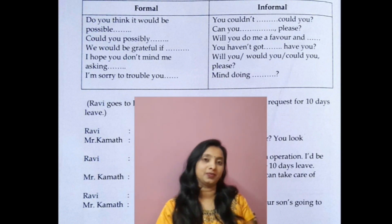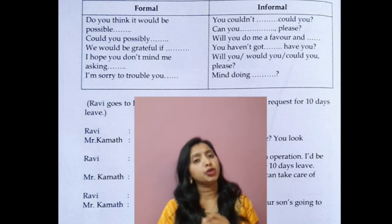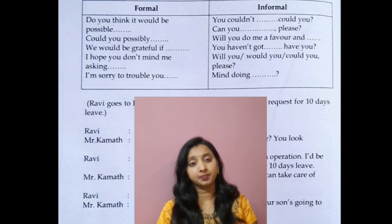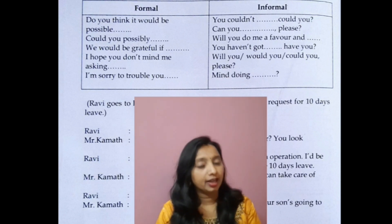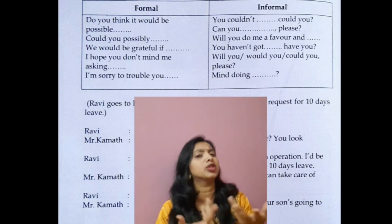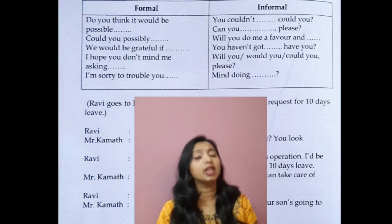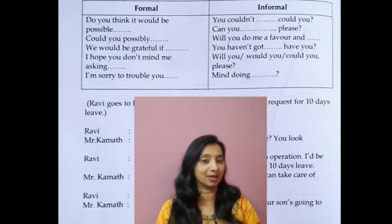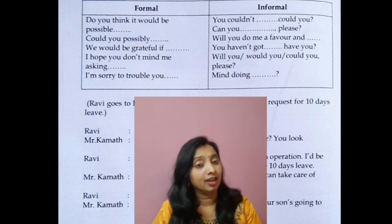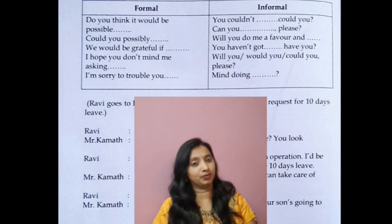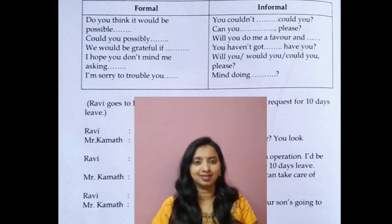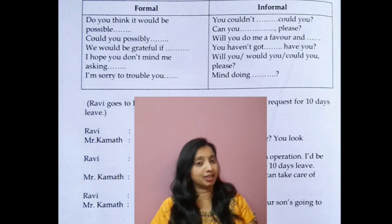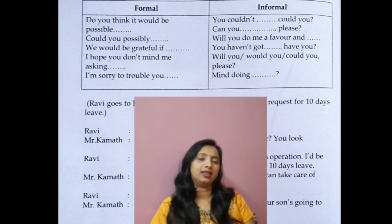The first formal expression is: 'Do you think it would be possible?' You use this to make a request. For example: 'Do you think it would be possible to complete this project for me?' or 'Do you think it would be possible to help me complete this project?'